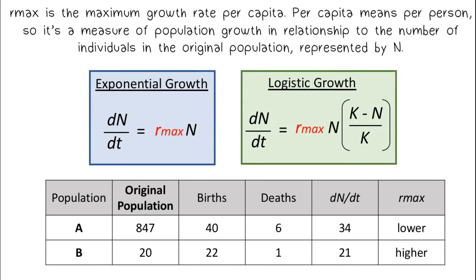Rmax is the maximum growth rate per capita. Per capita means per person, so it's a measure of population growth in relationship to the number of individuals in the original population, represented by n.